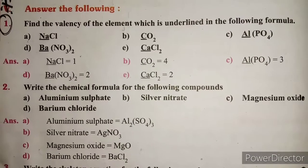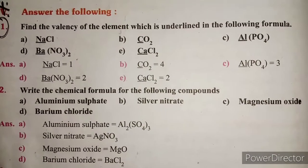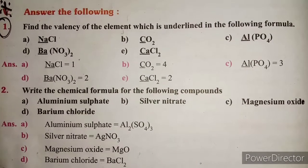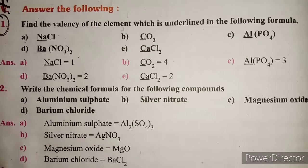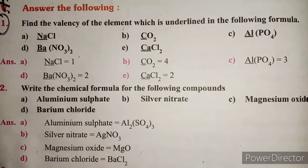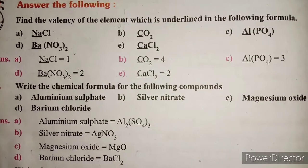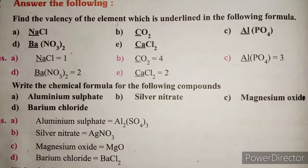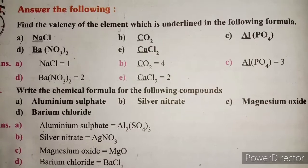Answer the following. Question 1: Find the valency of the element which is underlined in the following formula. NaCl: 1. CO2: 4. AlPO4: 3. Ba(NO3)2: 2. CaCl2: 2.